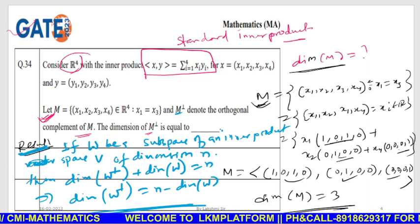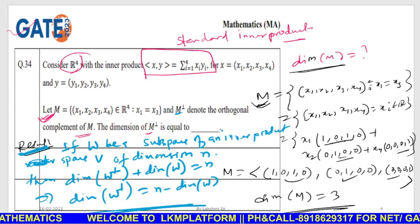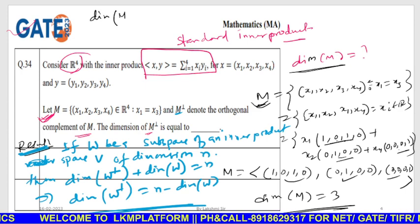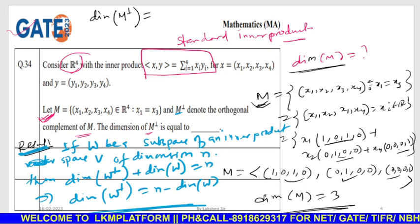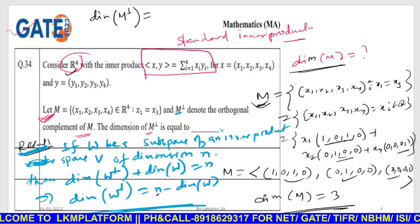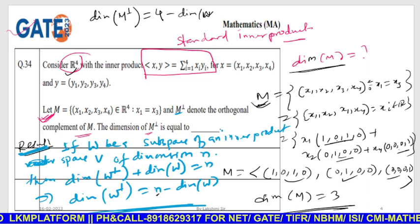This is a formula. Dimension of M perpendicular equals dimension of V space, which is 4, minus dimension of M.